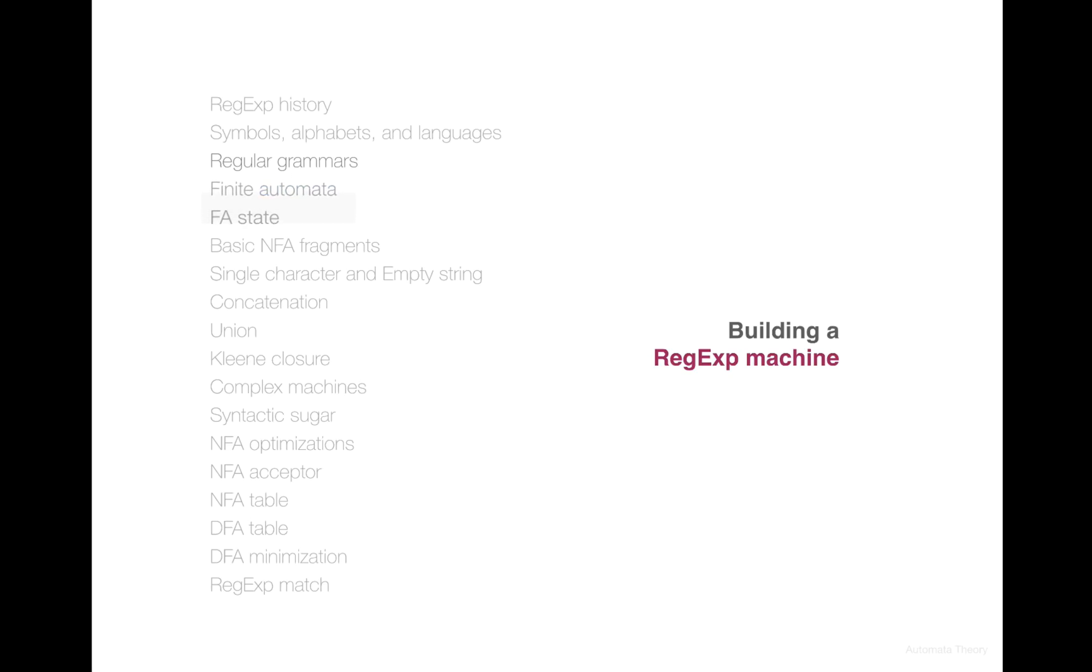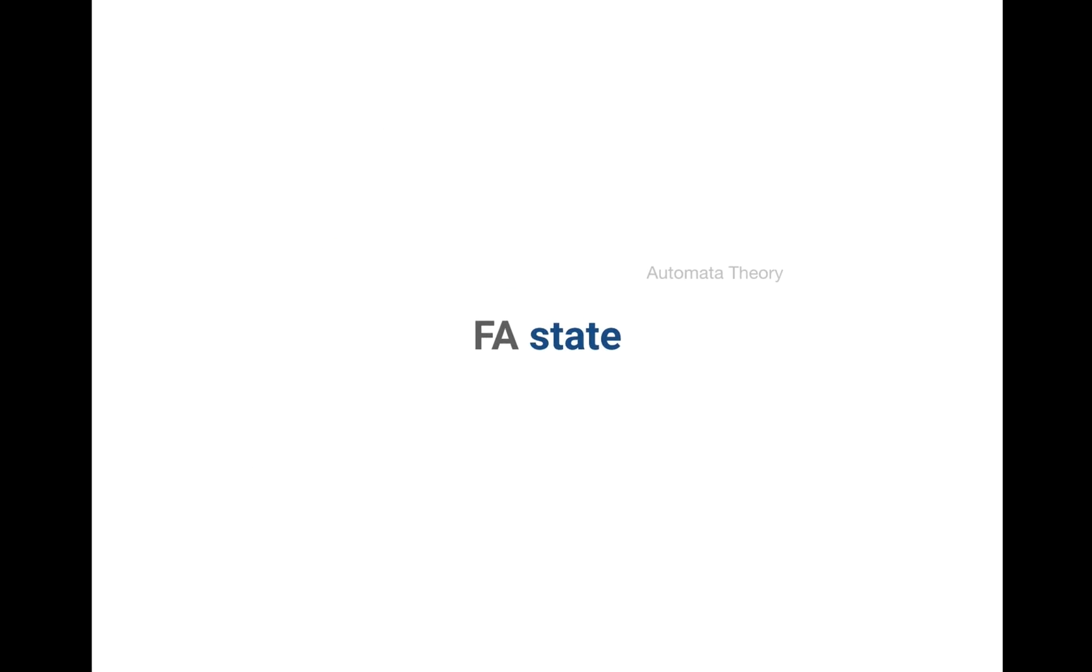Now we are ready for the first assignment. The first abstraction you're going to build is the finite automata state. Let's take a look at this example. So we represent a state as a class.